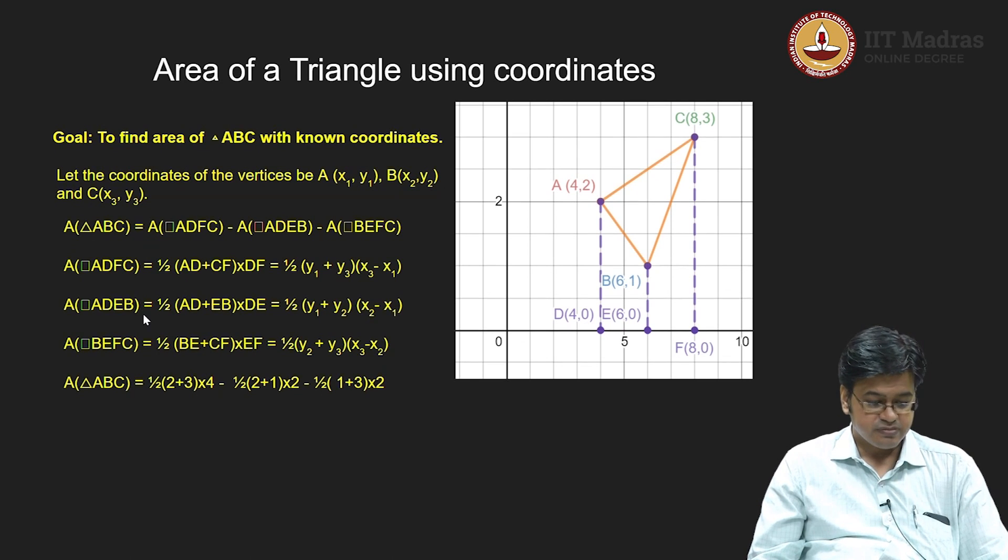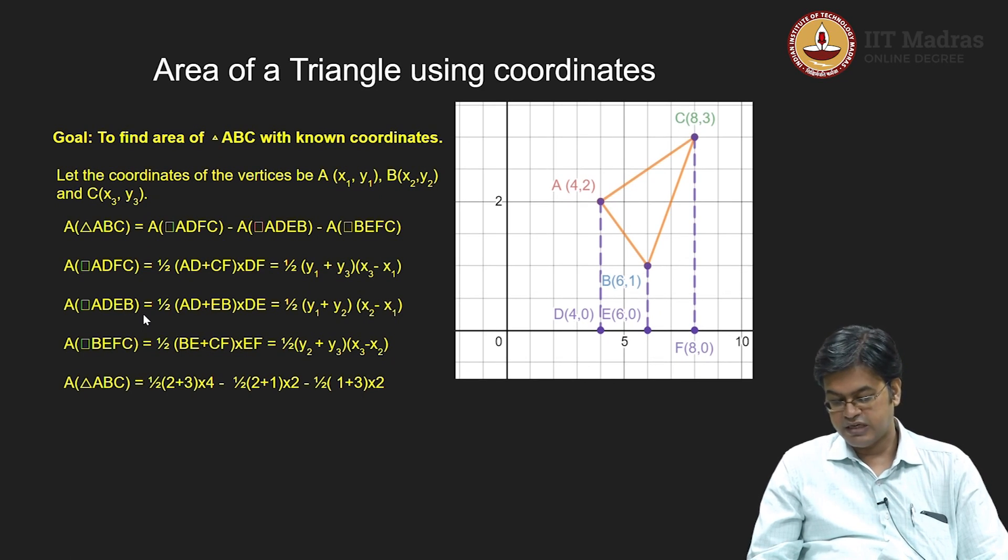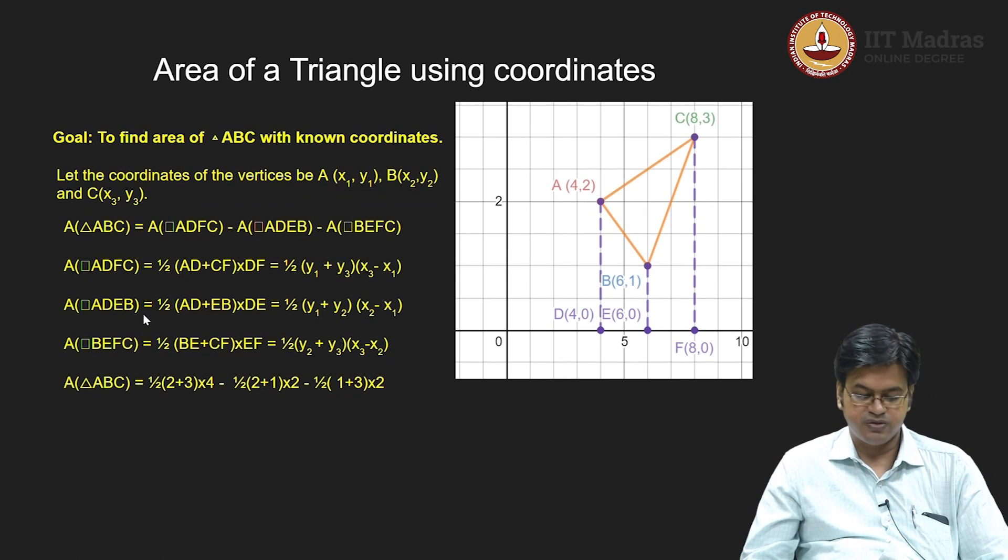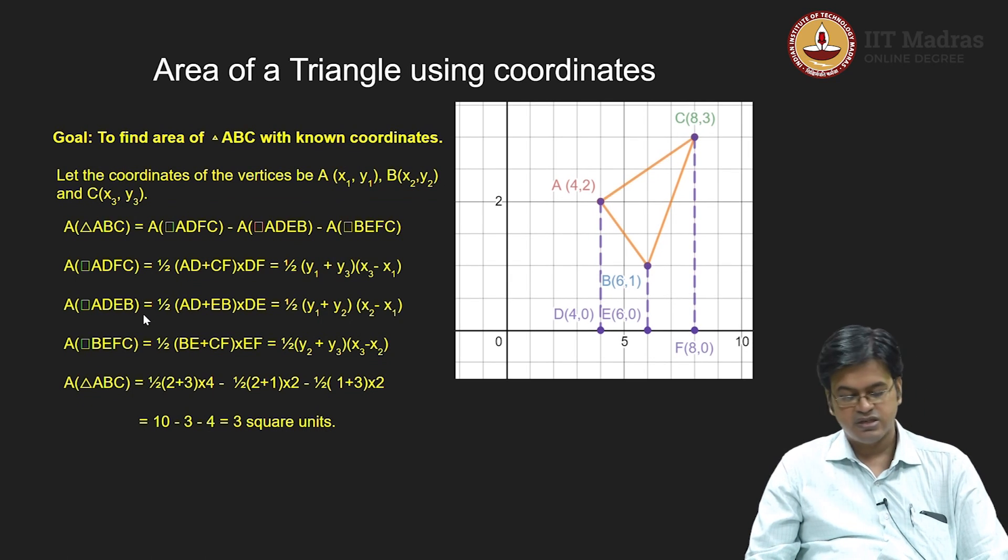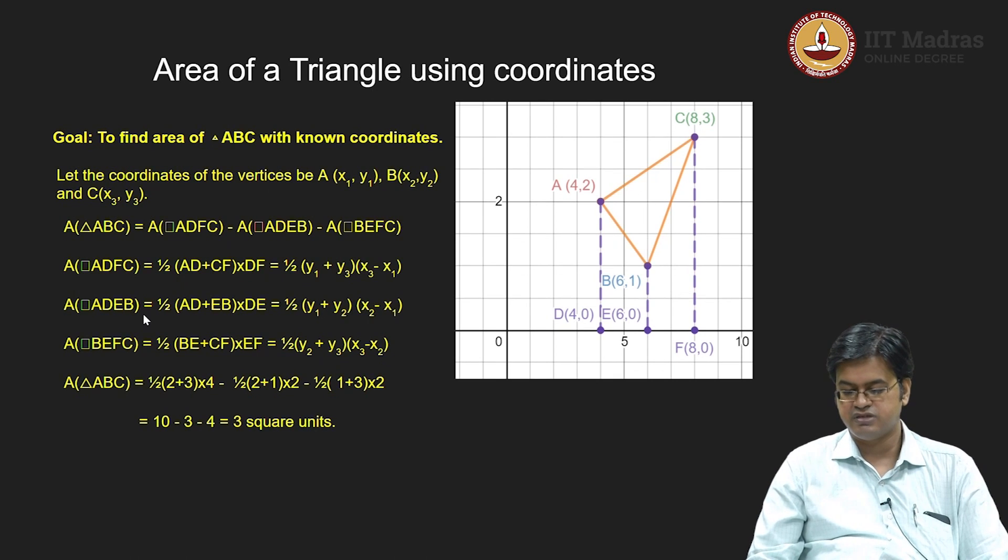The values are effectively in this particular case: the length of AD was 2, yes 4 comma 2 and 4 comma 0, the length of AD was 2, the length of CF was 3, into 4 minus, and similar calculations go ahead, minus half into 2 plus 1 into 2, minus half into 1 plus 3 into 2. So essentially what I got here is the area of the triangle ABC is 10 minus 3 minus 4, which is 3 square units.